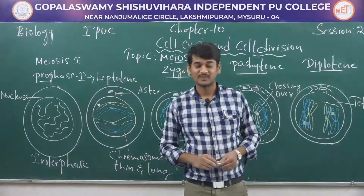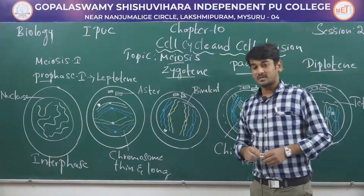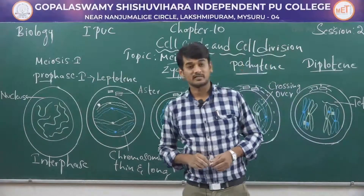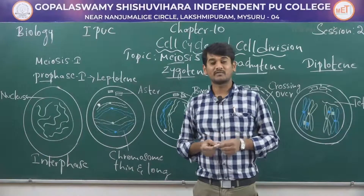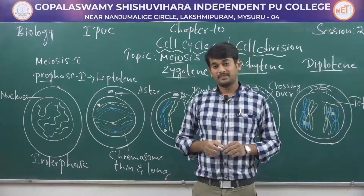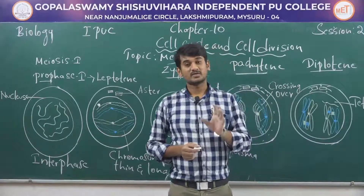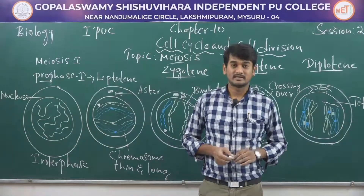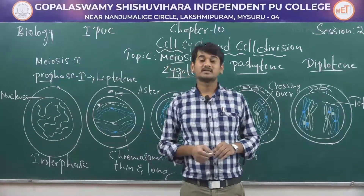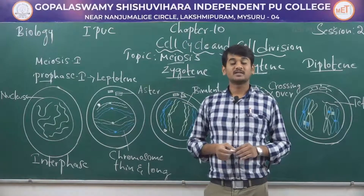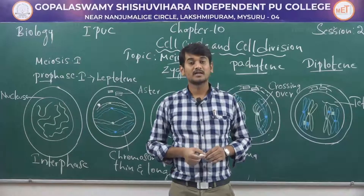Good morning everyone, welcome to session 2. In this session we are going to discuss meiosis. In the last session we discussed mitosis — it's a type of equational cell division where the parental cell gives rise to two daughter cells with an equal number of chromosomes. Meiosis is also a type of cell division occurring in diploid cells, giving rise to four haploid daughter cells which have half the number of chromosomes. That is why meiosis is also called reductional division. Meiosis occurs in reproductive cells during the process of gametogenesis and oogenesis.